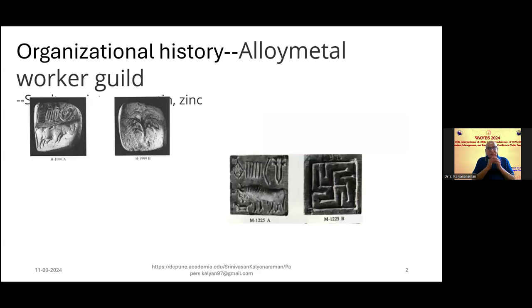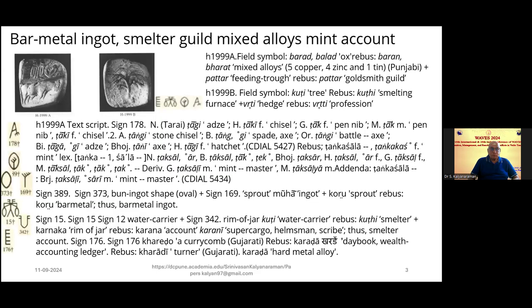The seals are remarkable because they are purely organized by graphemes. For example, on seal M-1225 we see a swastika on one side. On the reverse of the seal we have a bull looking down, a feeding trough, and some signs on top. The bull is Bharat, Balad, Ox. The rebus readings are similar-sounding words which signify Bharan, Bharat: mixed alloy — bi-copper, four-zinc, one-tin.